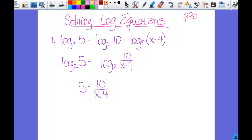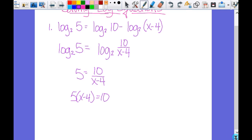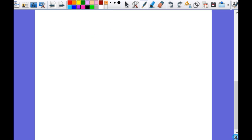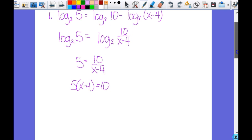So I can multiply both sides by x minus 4. That will give me 5 times x minus 4 over here. That's equal to 10. Make sure that you don't make a silly mistake. This is 5x minus 20. I know you know to distribute. Make sure you actually do it.